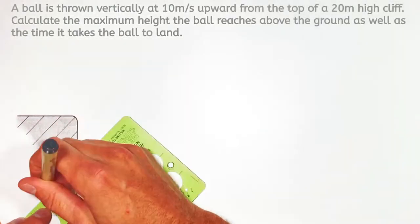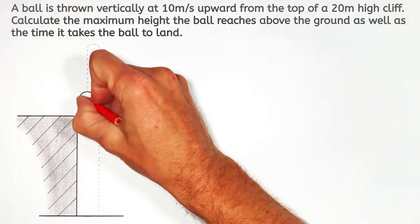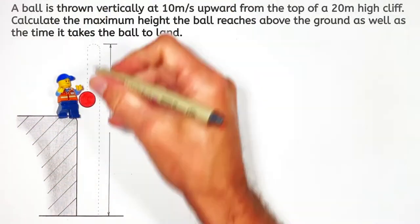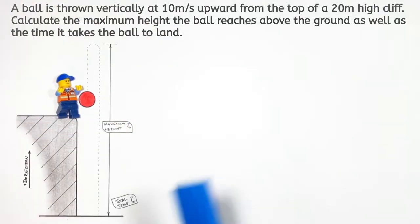Alright YouTube, today we're going to throw a ball straight up off the top of a cliff, let it go up in the air and come back down and land at the bottom of the cliff. In this problem we're going to solve for the maximum height the ball reaches above the base of the cliff, as well as the total time the ball spends in the air.